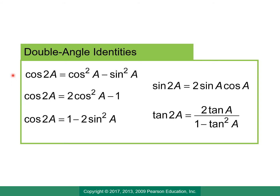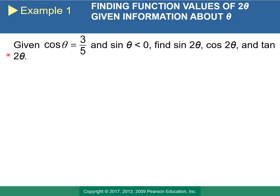Here are all five of our double angle identities. Technically it's three — cos(2a), sin(2a), and tan(2a) — but there are three forms for cos(2a). The second and third alternate forms for cos(2a) can be found using the Pythagorean identity. We're going to use these in some examples. In our first example, we're given cosine θ = 3/5 and told that sine θ is negative.